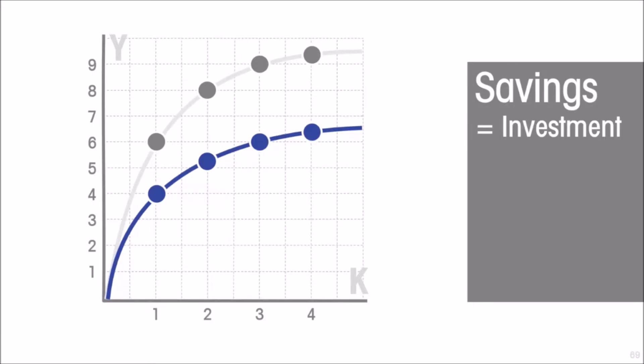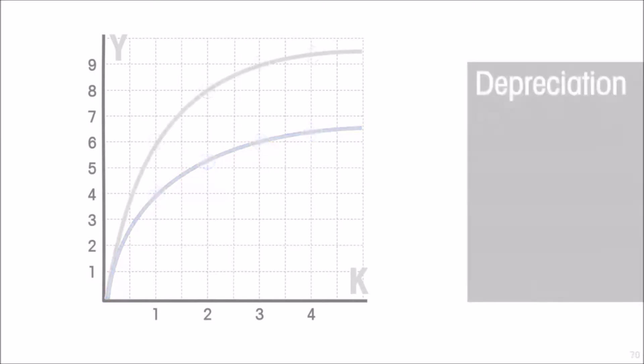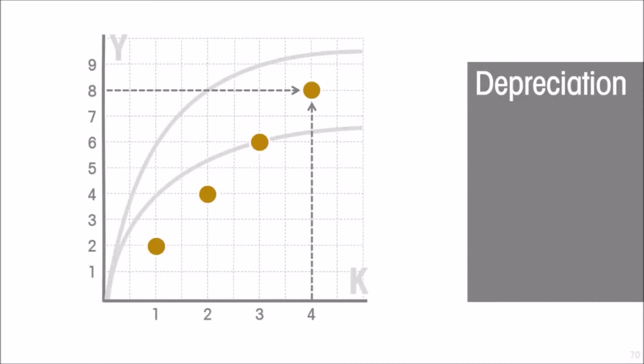The third component we need is how much capital depreciates at each point. Depreciation is going to be a simple proportional relationship because the more capital you have, the more it depreciates. So whatever is the proportion, it's going to be a straight line. The more capital, the greater the repairs and maintenance and replacement that you have to engage in just to keep your capital stock constant.